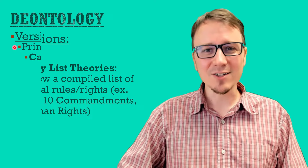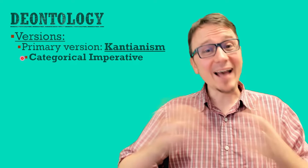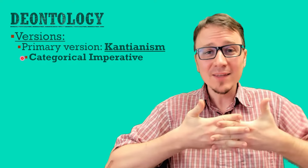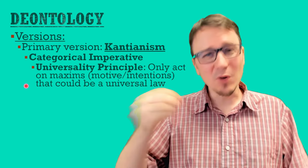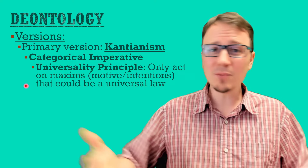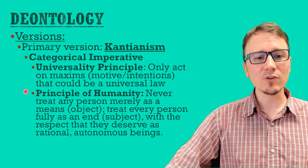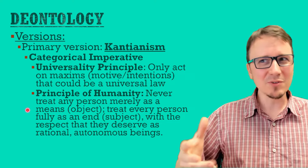Arguably the most influential version of deontology is Kantianism, named after the philosopher Immanuel Kant. The foundation of Kantianism is what's called the categorical imperative. For Kant, reason and morality are one and the same, so if you're going to have a reason for action, you should be able to think of it as a universal law — this is sometimes called the universality principle. Only act on maxims, your motives, intentions, and reasons for action, that could become a universal law of nature. You have to be able to imagine everybody else also using those same reasons for action, and if you can't, or if it leads to a logical contradiction, it's wrong. Another formulation of the categorical imperative is the principle of humanity, which states that we should never treat any person merely as a means or as an object; instead, treat every person as an end — a subject with reason and autonomy just like you.